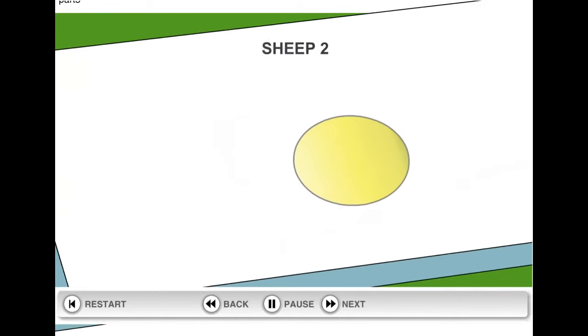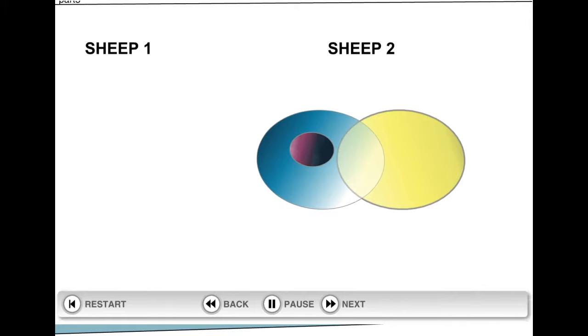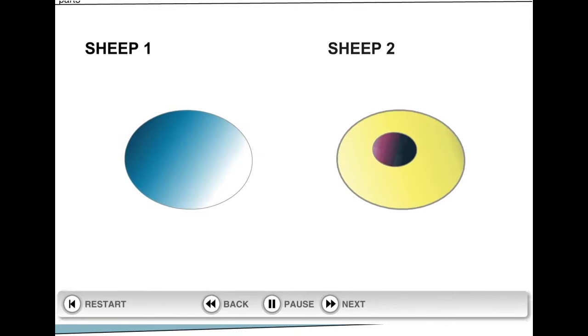Once the ovum had been enucleated, it was then fused with a cell from the Sheep 1 culture of deprogrammed udder cells. In effect, emulating the process of a sperm entering the egg, but with both copies of the chromosomes coming from the same parent sheep, Sheep 1. So the newly fertilised egg is genetically identical with this single parent.